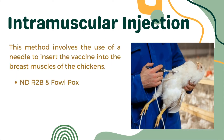The first vaccination method is the intramuscular injection. This method involves the use of a needle to insert the vaccine into the thighs of the chicken, or usually into the breast muscles. This method is usually used for vaccines NDR2B and Faltox.